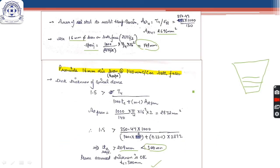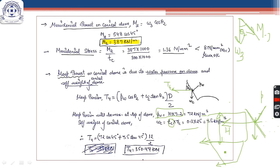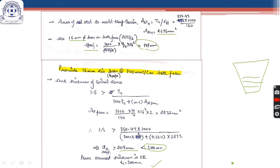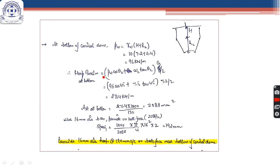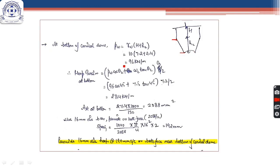The hoop reinforcement calculated above is at the top of the conical dome, where water pressure = γw·h (height of cylindrical portion). At the bottom of the conical dome, the water pressure reduces due to the shape of the dome. We can also calculate the hoop tension at the bottom of the conical dome and provide separate reinforcement there, since the requirement will be less.